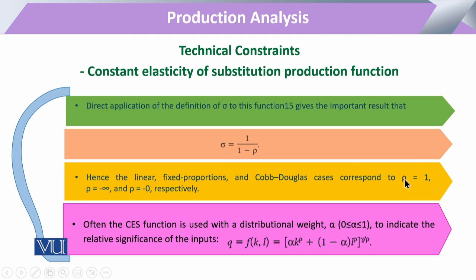When rho equals 1, that corresponds to the linear production function.